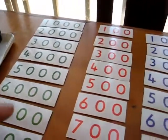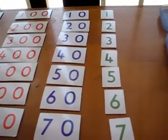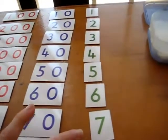So I have the thousands in green, the hundreds in red, tens in purple, and the units in green.